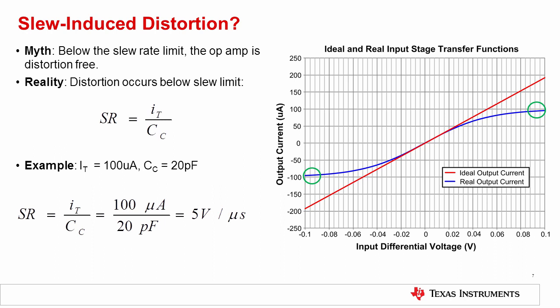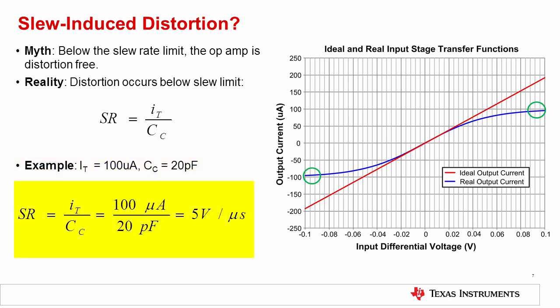Let's consider an example where the tail current is 100 microamps and the compensation capacitor is 20 picofarads. In this case, the slew rate can be calculated to be 5 volts per microsecond. However, slewing will only happen for input differential voltages greater than plus or minus 100 millivolts. By the time that level of differential input voltage is applied, the input stage of the amplifier is already extremely non-linear. So, the slew rate only defines the fastest rate of change in the output of an op amp. It does not define a barrier beyond which distortion starts, because the input stage distortion begins well below the slew-rate limitation.